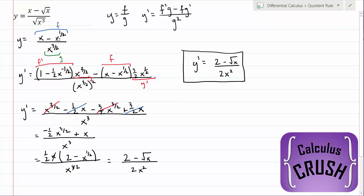You could also, at this step here, you could divide both x and x to the half by x to the 3 halves. So that would give you x to the minus half minus x to the minus 1. And then just do the power rule on this. Actually, let's do that right now.